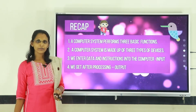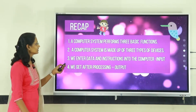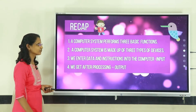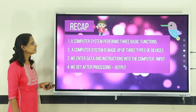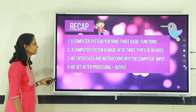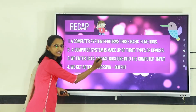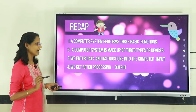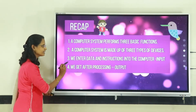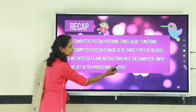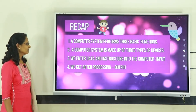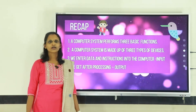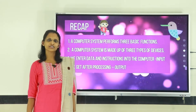Let us have a recap of the session. A computer system performs three basic functions: input, process, and output. A computer system is made up of three types of devices: input devices, processing device, and output devices. We enter data and instructions into the computer — that is input. We get results after processing — that is output. With this, we have come to an end of the section. Thank you.